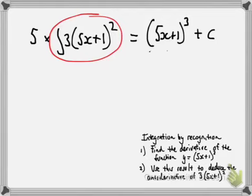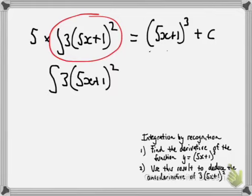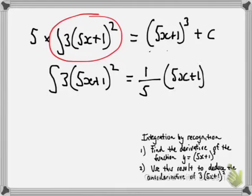OK, so therefore, the integral of 3 outside of 5x plus 1 all squared equals 1 fifth, or just divide it by 5, it doesn't matter. Now, we don't have to divide the C by 5, because C is just C, it's any number. And there's the answer.